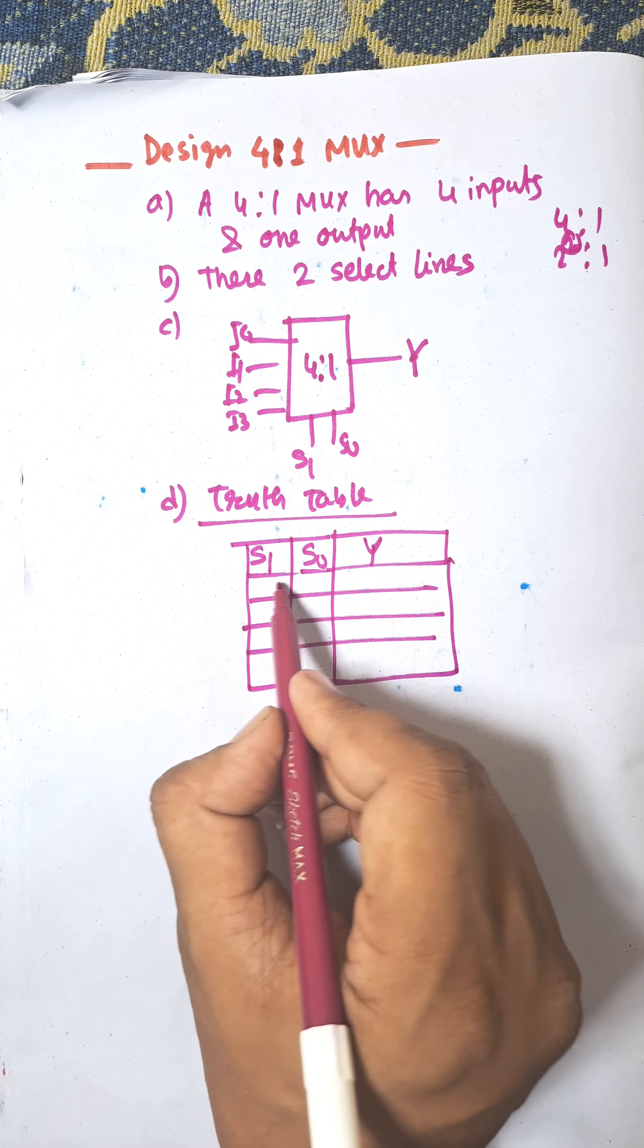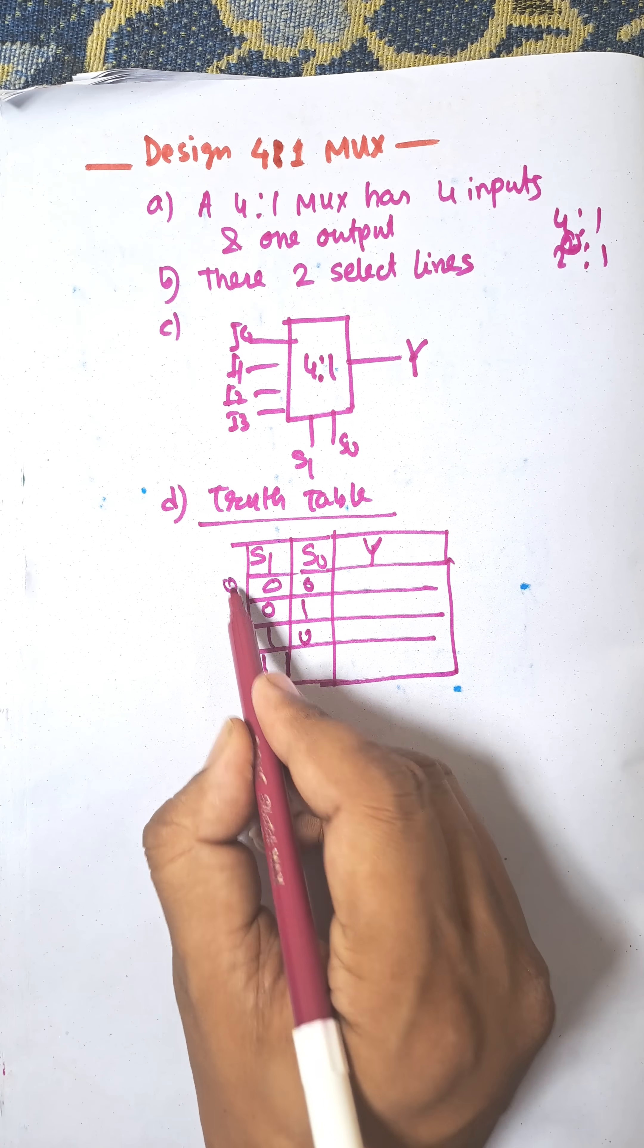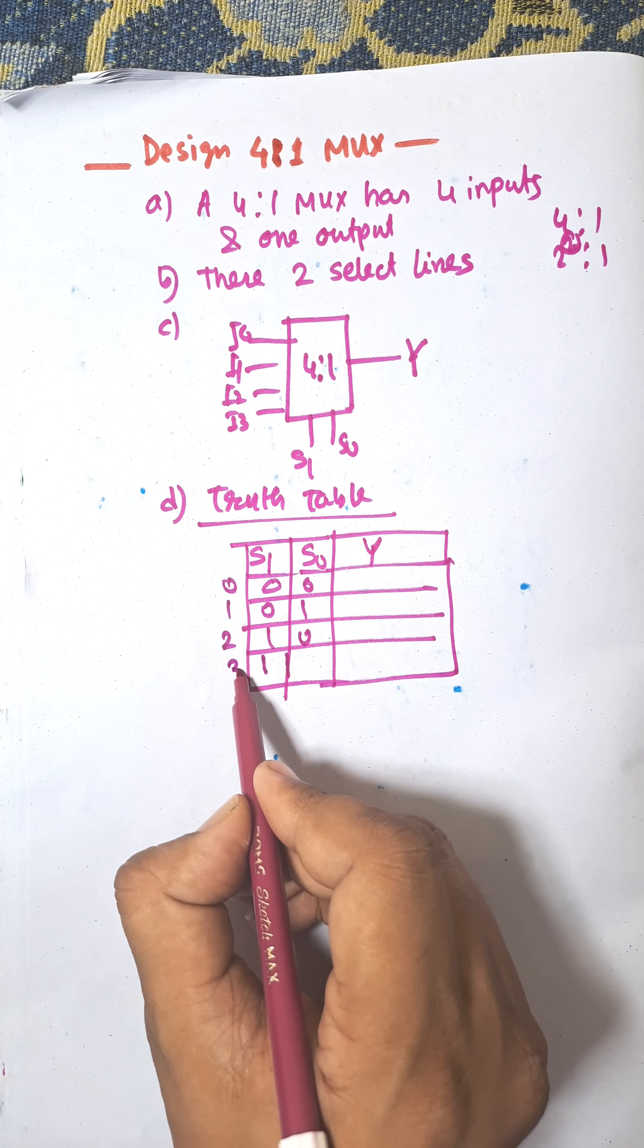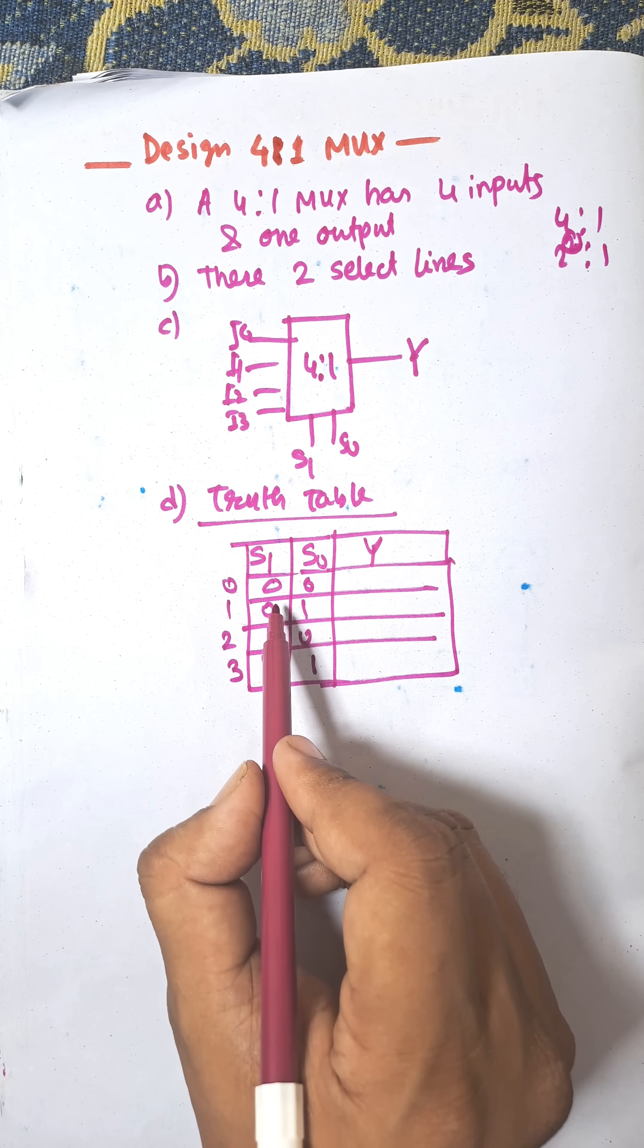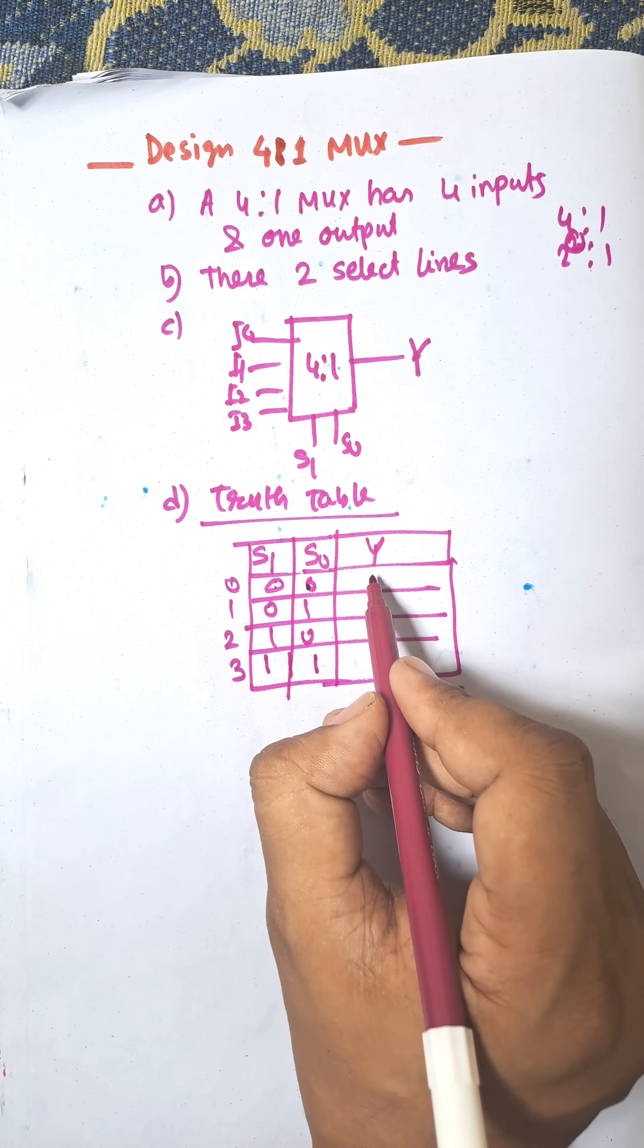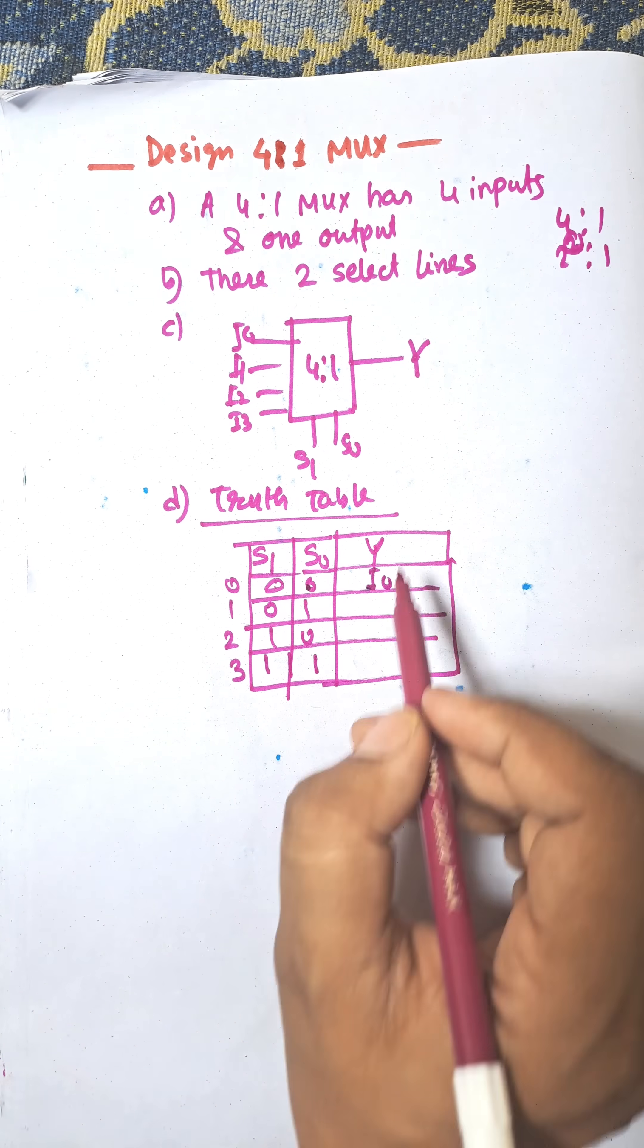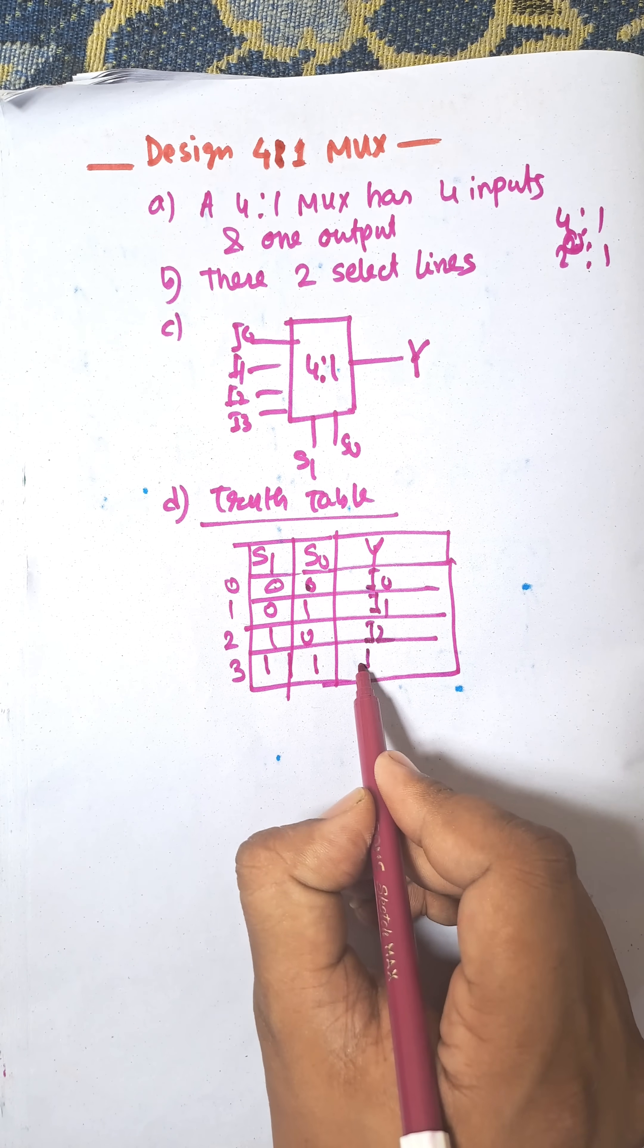When select lines have combinations 0-0, 0-1, 1-0, 1-1, these are equivalent to binary numbers 0, 1, 2, 3. When select input is 0-0, then output will be I0. When 0-1, I1. When 1-0, I2. When 1-1, that equals I3.